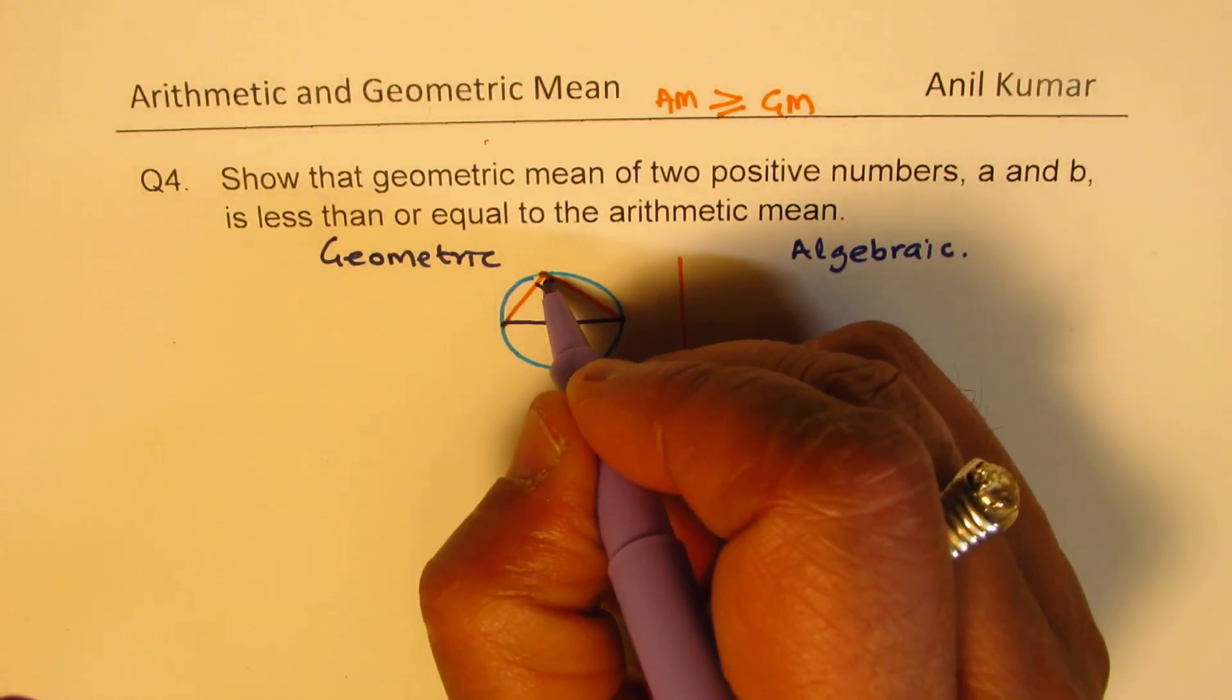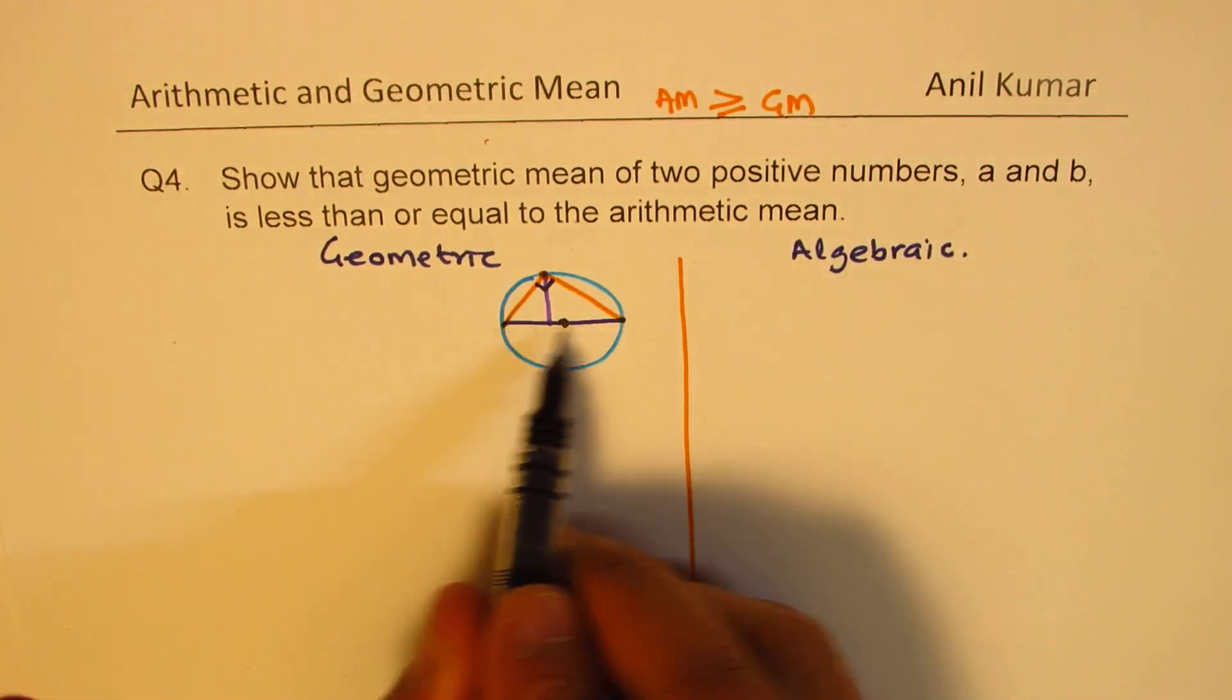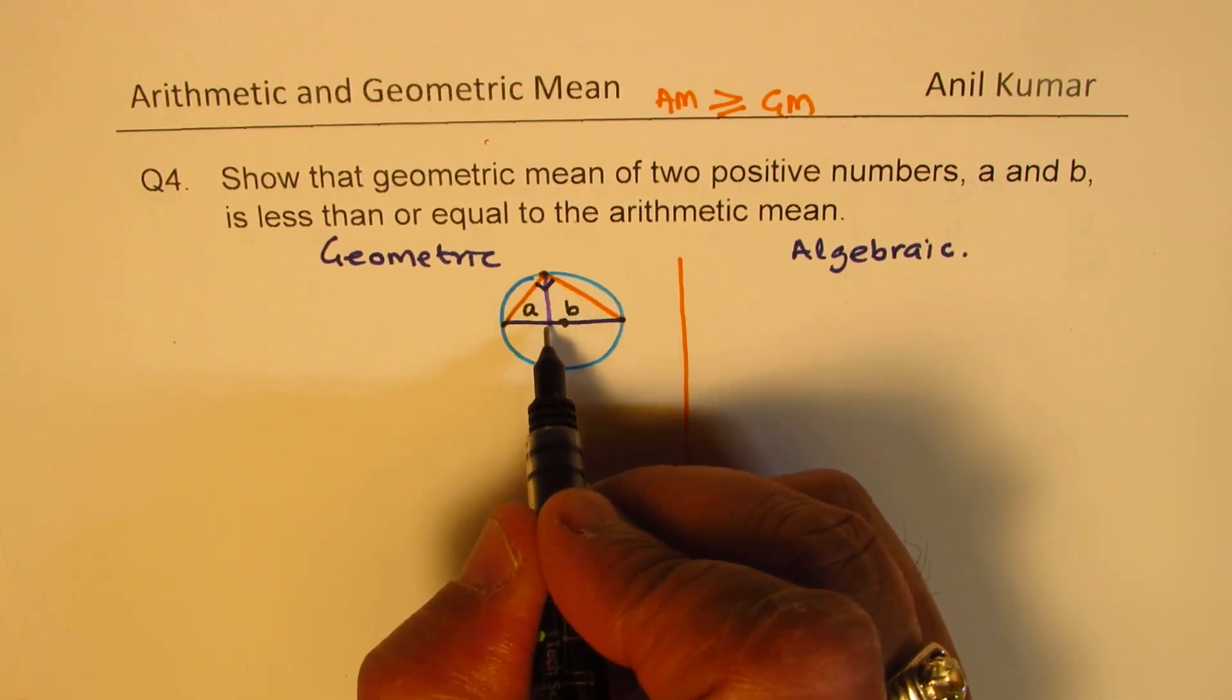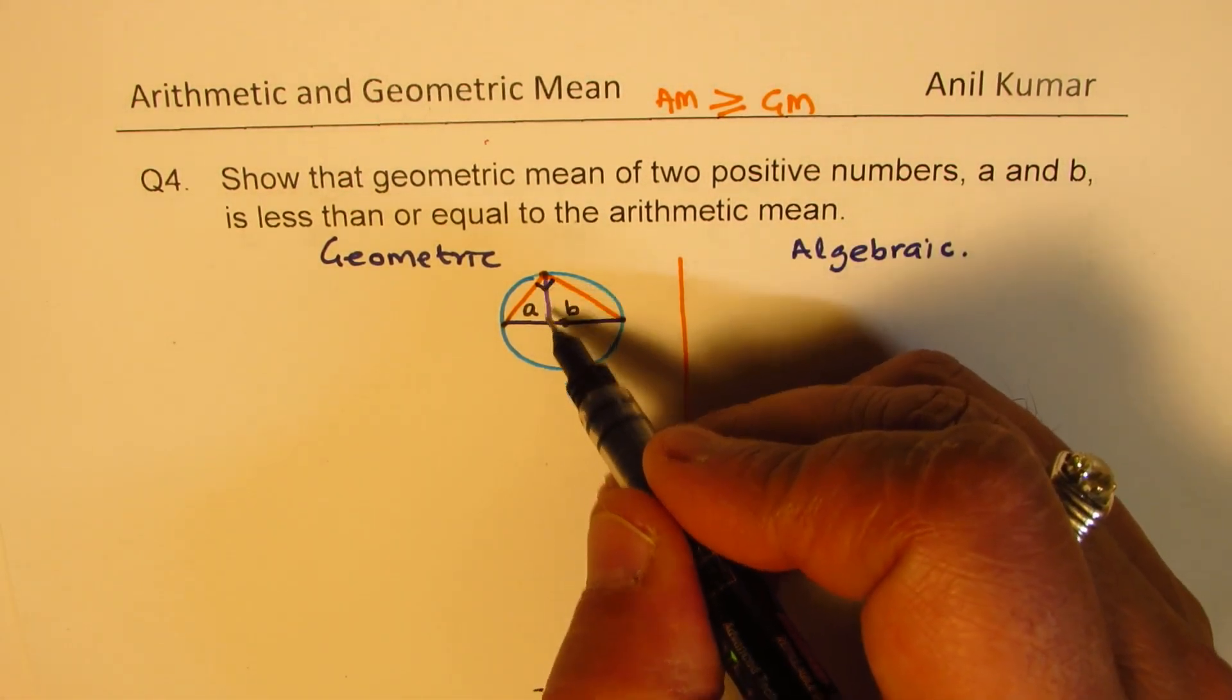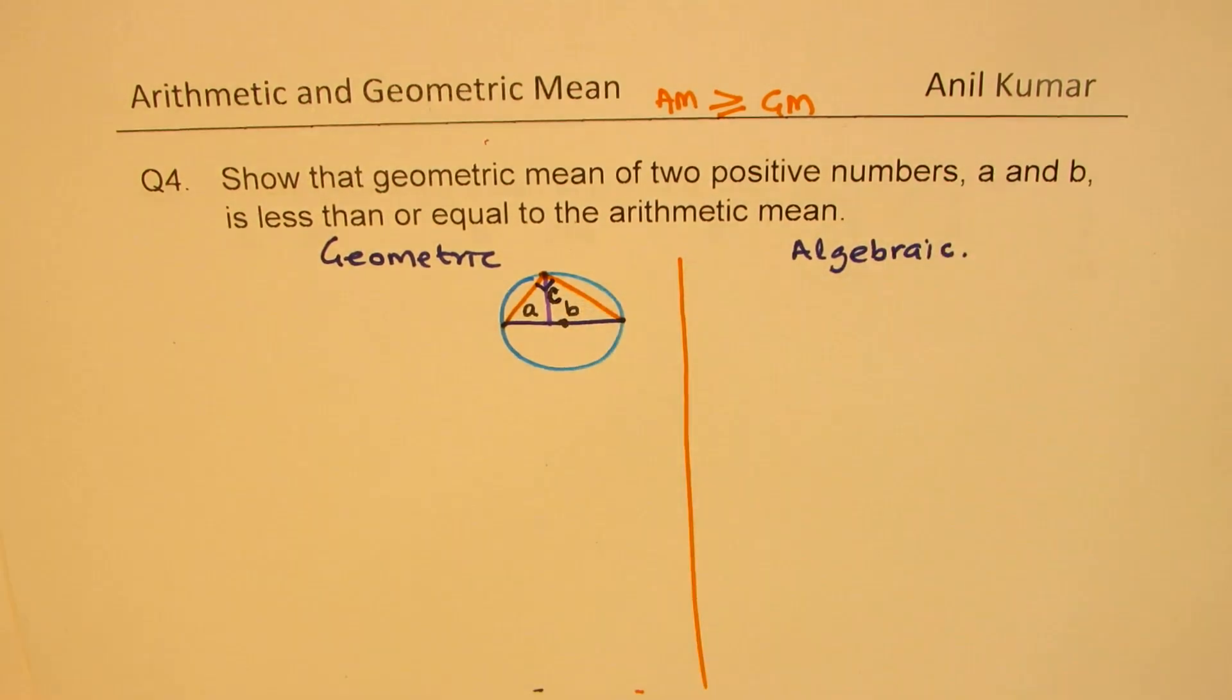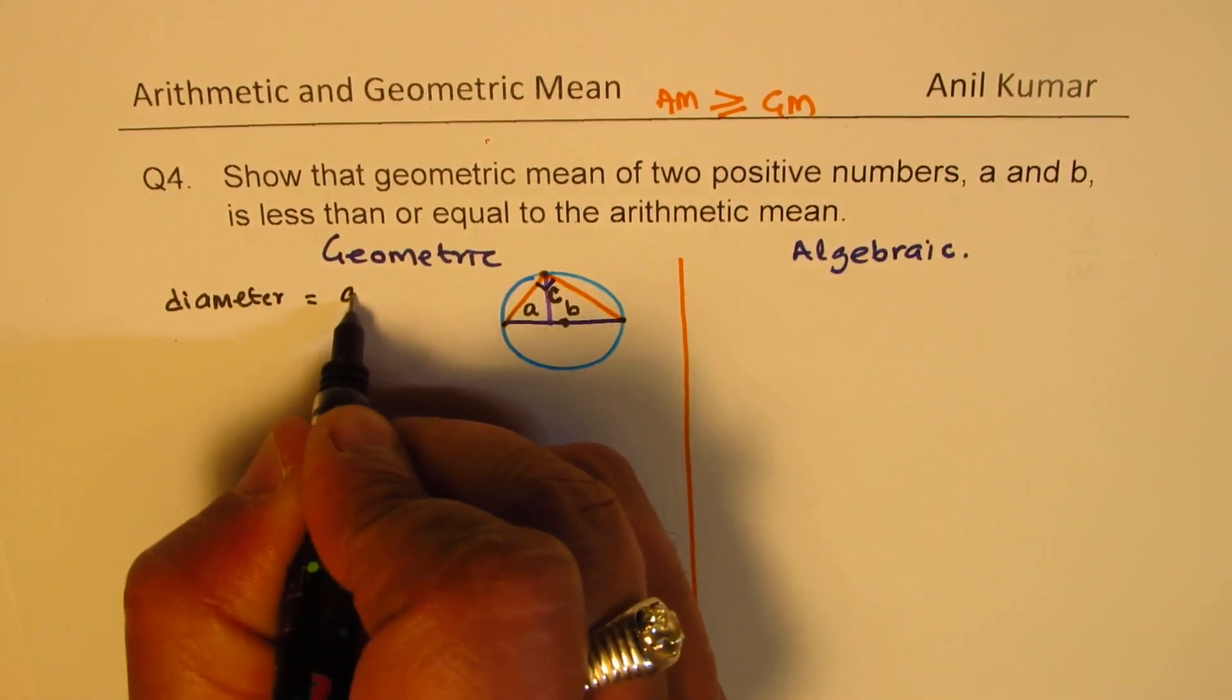Now from this right angle triangle, let me draw a perpendicular. In general, this will not go through the center. Let us say that this diameter is divided into two parts A and B with this altitude or perpendicular from the third vertex which is at 90 degrees with these two sides. Let's call that side as C. So we have this particular circle with a diameter. The diameter is equal to A plus B.